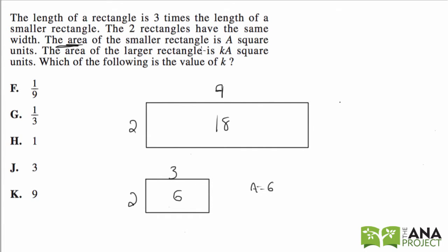The area of the larger rectangle is ka square units. So ka equals 18. And we know a is 6. So 6k, I'm just substituting 6 for a. 6k equals 18.